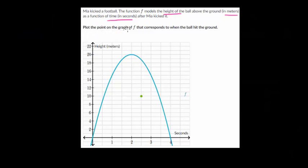We need to plot the point on the graph of f that corresponds to when the ball hit the ground. At zero seconds, that's when she kicks the ball. Then as time goes on, it looks like at two seconds, the ball will reach a maximum height of 20 meters. And then as time continues, the ball starts dropping down. The ball is going to go up in the air and then start falling.